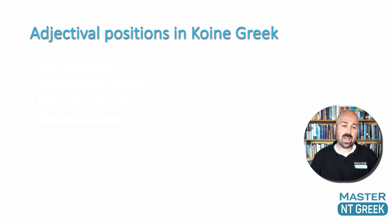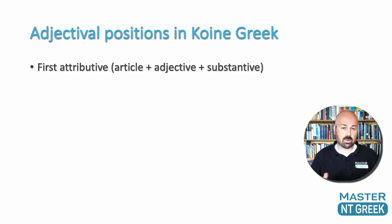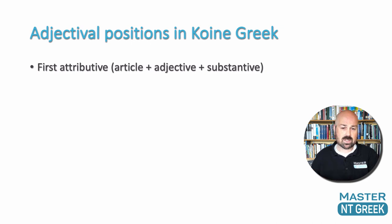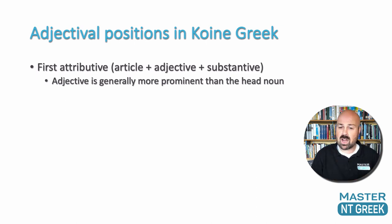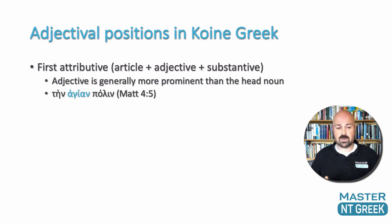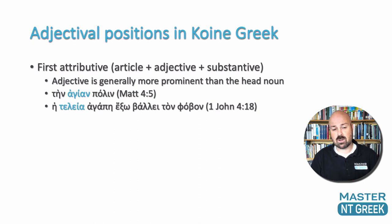There are four ways that adjectives can function as attributive adjectives in Greek. The first is called the first attributive, where you get the article followed by the adjective followed by the substantive. In this construction the adjective is generally more prominent than the head noun — the focus is on the describing word. For instance, 'the holy city' in Matthew 4:5, or 'hei teleya agape,' the perfect love — article plus adjective followed by the noun.